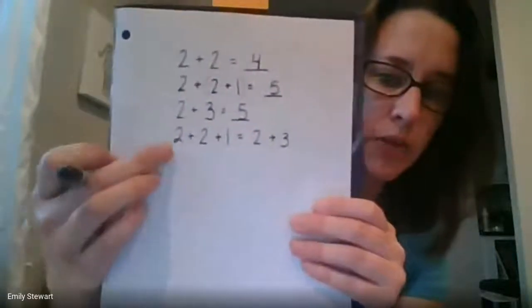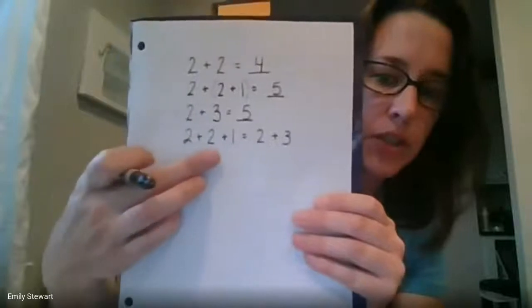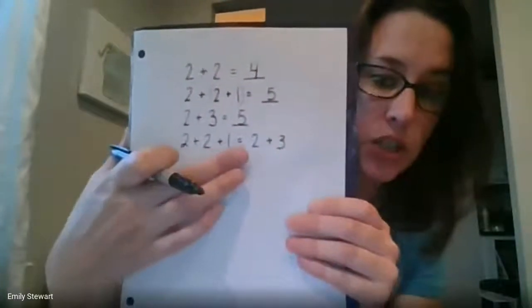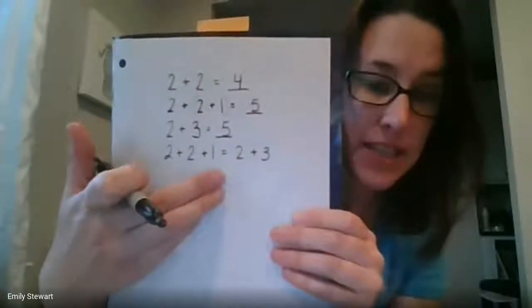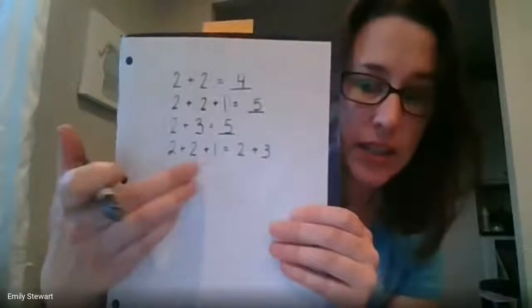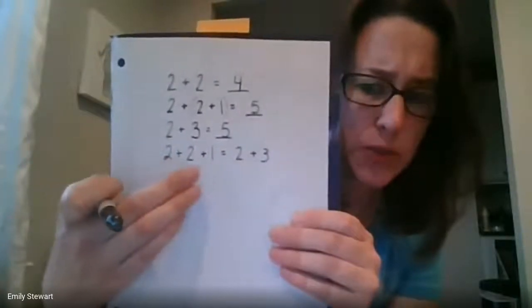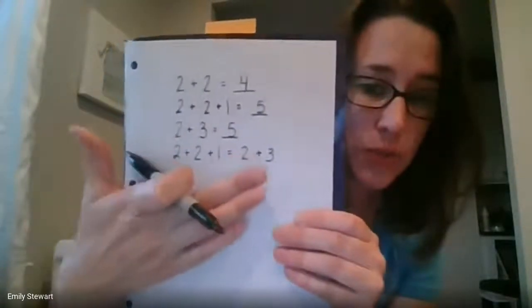Okay, now I'm going to write something down. You tell me if it's true or false. All right. Let's see what I wrote down here. Two plus two plus one equals two plus three. Who remembers what the equal sign means? It means the same as. So is two plus two plus one the same as two plus three?